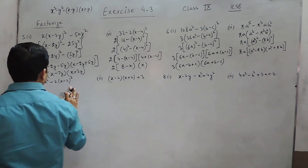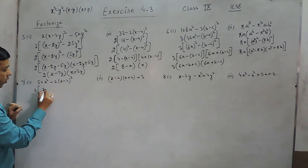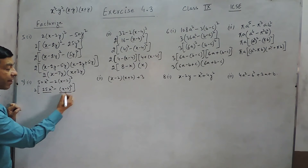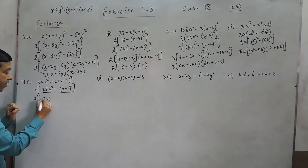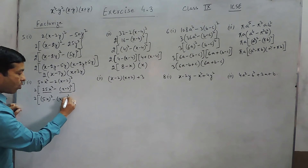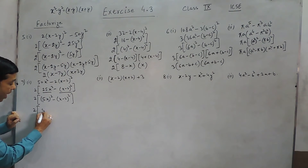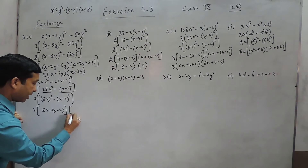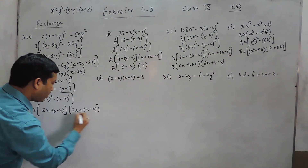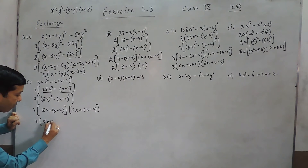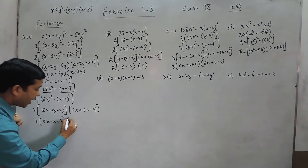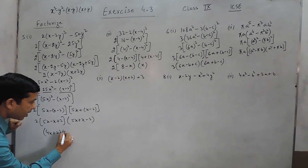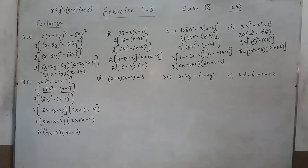Looking at this question, 2 can be taken as common, giving 25x² - (x - 2)². These are two perfect squares, so this can be written as (5x)² - (x - 2)². With 2 already common, using the identity we get 2 × (5x - (x-2)) × (5x + (x-2)). Solving further: minus multiplied by minus is plus, so the first factor is (4x + 2) and the second factor is (6x - 2), with 2 already common.